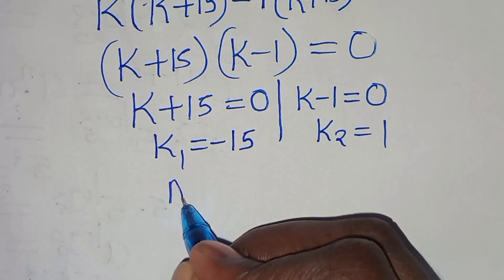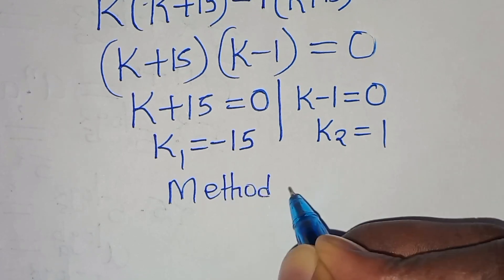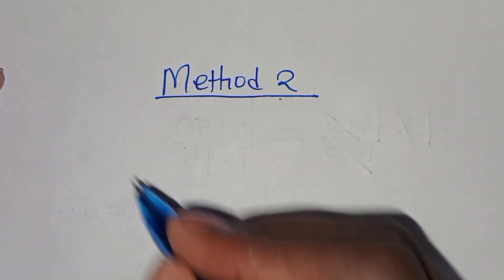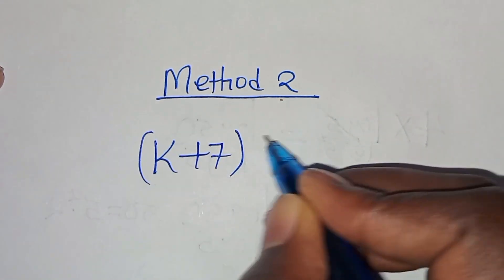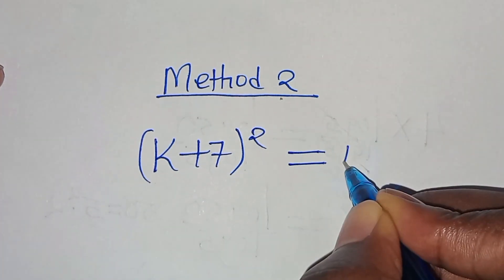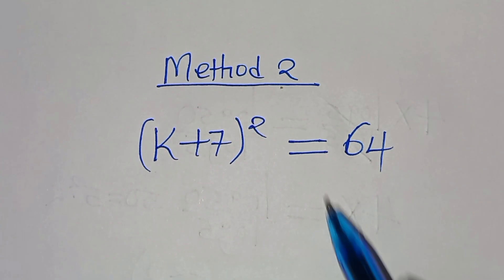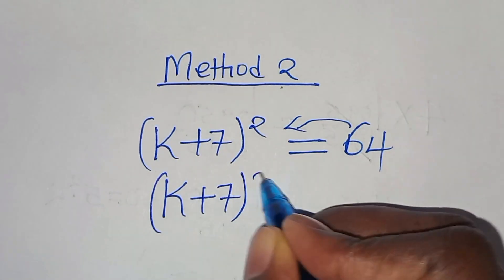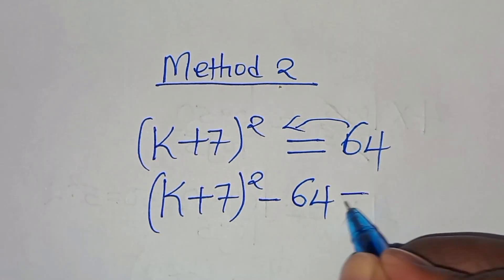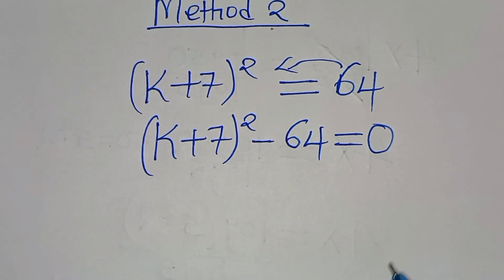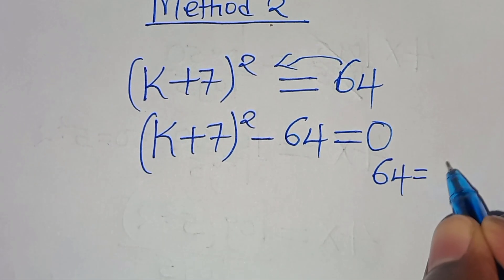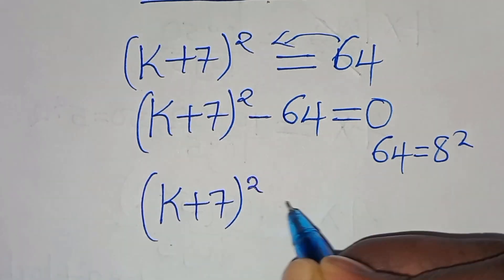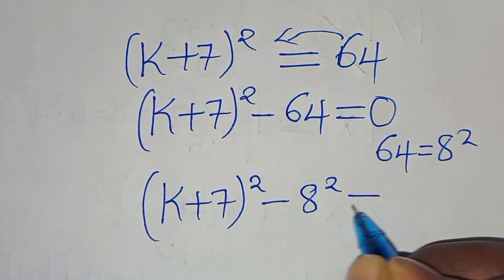Method 2: We have (k + 7)² = 64. Taking 64 to the left-hand side, we get (k + 7)² - 64 = 0. Since 64 = 8², this becomes (k + 7)² - 8² = 0.